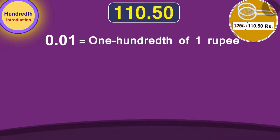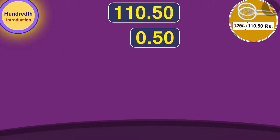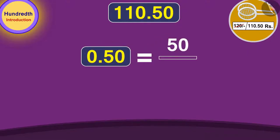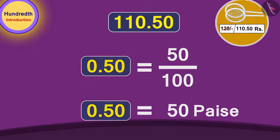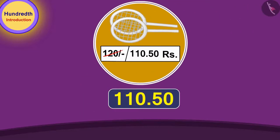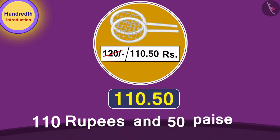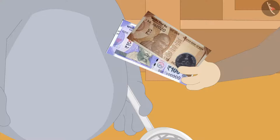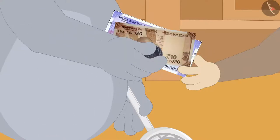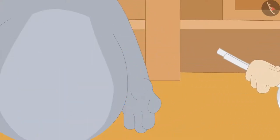So fifty paise equals zero point five zero rupees. The price of the badminton racket is one hundred and ten rupees and fifty paise. Bhoola quickly understood and bought the badminton racket by giving one hundred and ten rupees and fifty paise to Gaggoo.